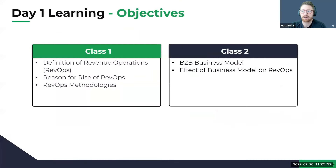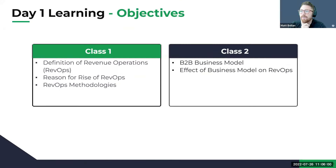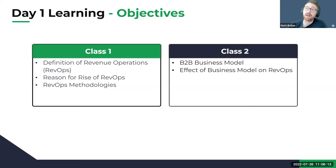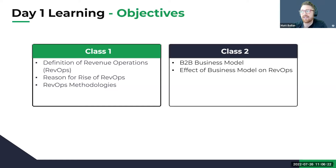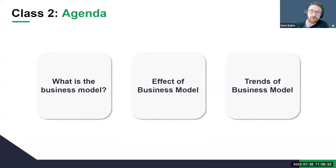So let's talk about what this is. As a reminder, we finished class one earlier this morning. We remember the definition of revenue operations. Class two is going to be nice and digestible — tomorrow it's going to be a lot more full. Class two covers the B2B business model and the effect of the business model on key RevOps metrics. That's the two objectives. From these two objectives, here are the three questions: What is the business model? What's the effect of the business model? And what are key trends inside the business model that, as revenue operations professionals, we must be thinking about?